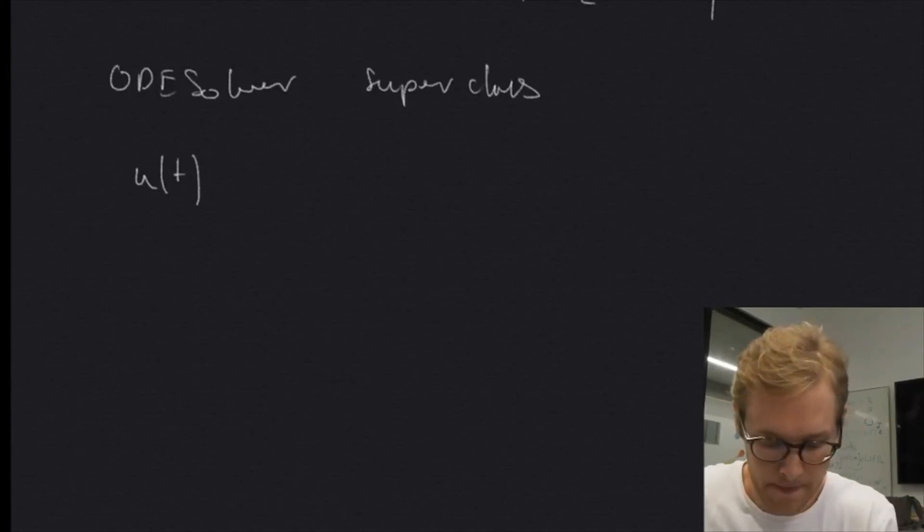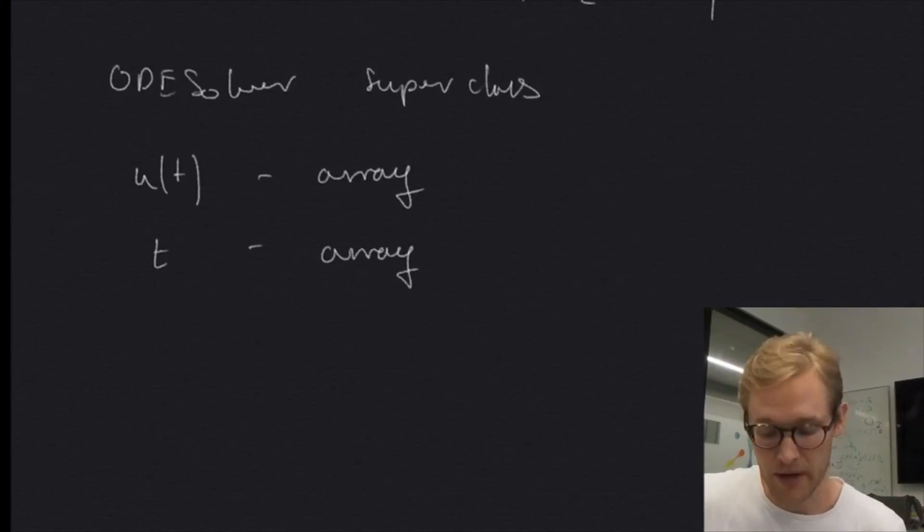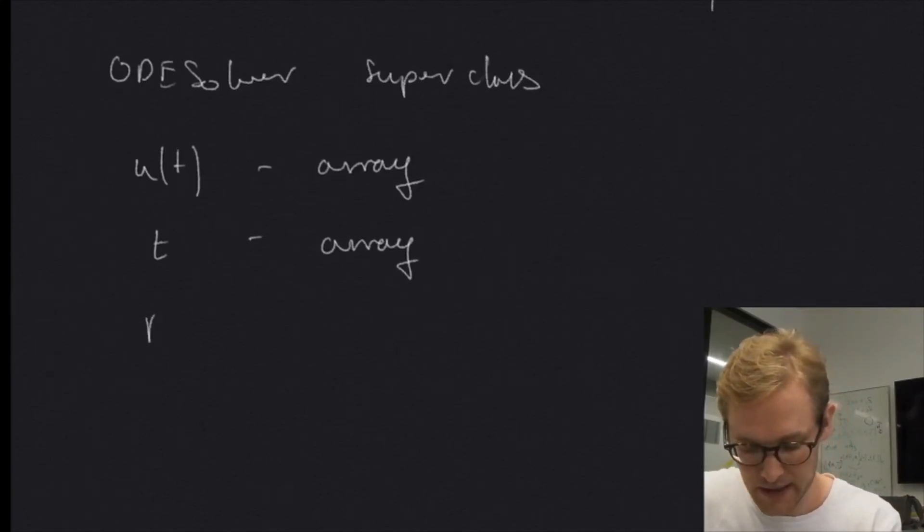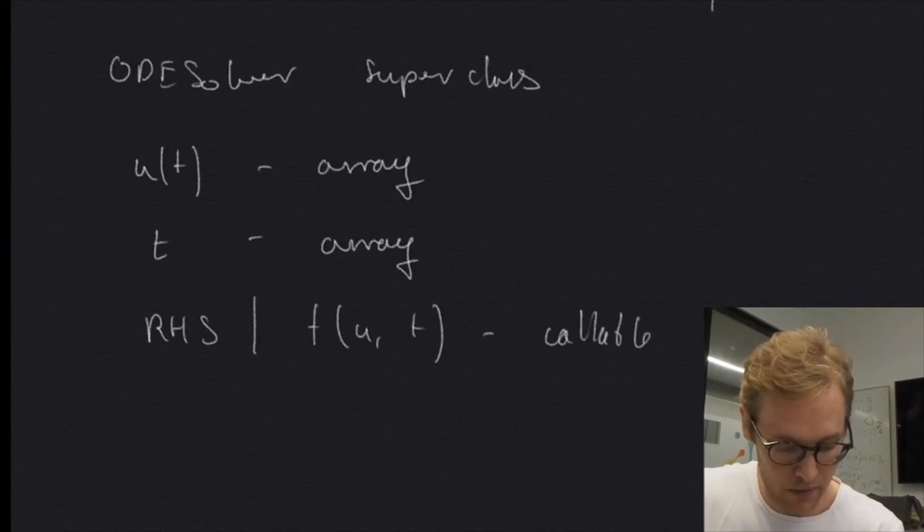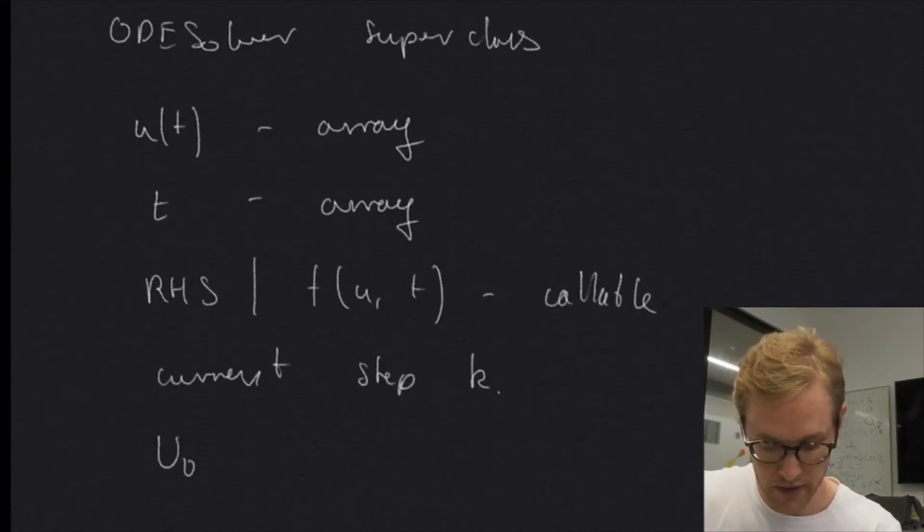What we need is we need to store our solution, U as a function of T, as some sort of array, and we need to hold corresponding values of T in some sort of array. And we need to have some information about the right hand side, that is our function of U and T, which, and this one needs to be some sort of callable Python object, callable, and what more do we need? We need to hold the current step number, so current step K, and we need an initial condition, so U zero, this is our initial condition. That's where we start.